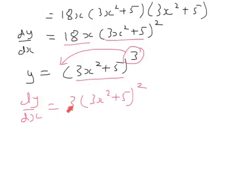Look, that's 18x, and that's 3x. So altogether, there's a factor of 3 times 6x is 18x. Where does 6x come from? 6x comes from differentiating what's inside the bracket. So 6x comes from differentiating 3x squared plus 5.